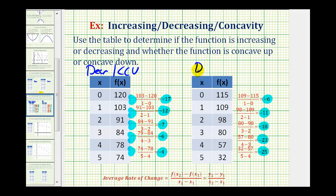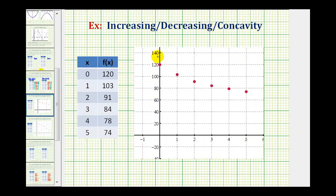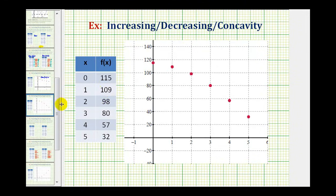So this function is decreasing and concave down. Now let's verify this by graphing these points. Here's the first table — notice how it's going downhill, so the function is decreasing. But notice how it also forms an upward facing cup, therefore it's concave up. Here's the graph of the second table. Again, notice how it's going downhill, therefore it's decreasing. But notice how the points form a downward facing cup, and therefore it's concave down.